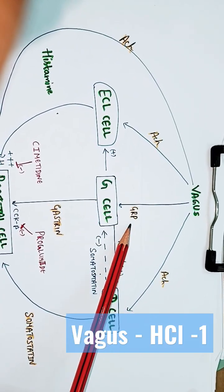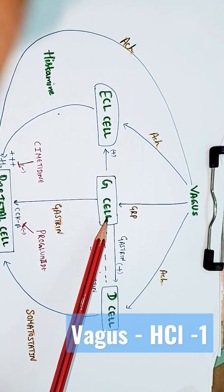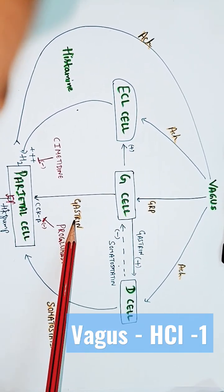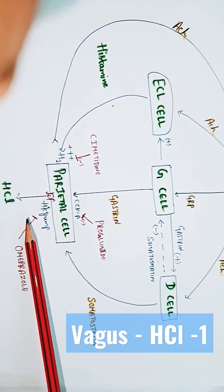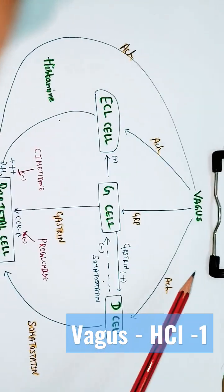Vagus nerve releases gastrin-releasing peptide as a neurotransmitter, stimulates the G cell. G cell releases gastrin hormone which acts on parietal cell and increases HCL production. If you see here,